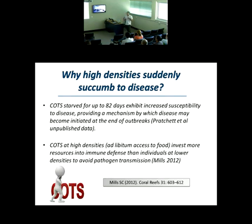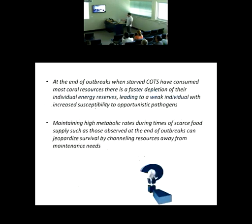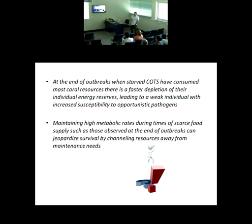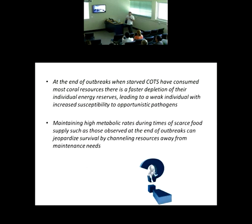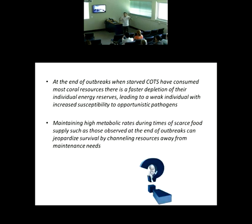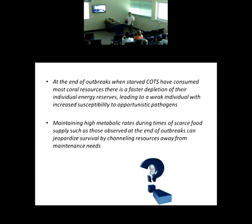Crown of Thorns at high densities invest more resources in immune defense than at low densities — they start producing more cells to avoid pathogen transmission when they reach very high densities. So what happens at the end of outbreaks? The starfish eat all the corals, but at some point they run out.